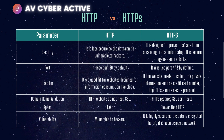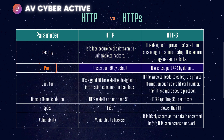This table should help you understand the difference between HTTP and HTTPS. Beginning with the security aspect: HTTP is less secure as the data is vulnerable to hackers and is transferred in plain text. HTTPS is designed to prevent hackers from accessing your critical information and is secure against such attacks. Regarding port: HTTP uses port 80 by default, while HTTPS uses port 443.